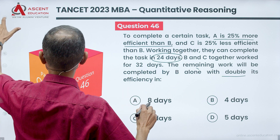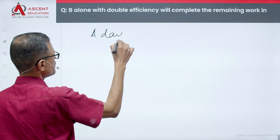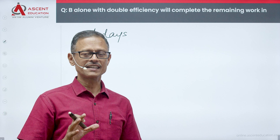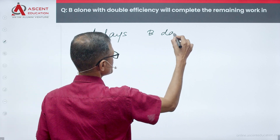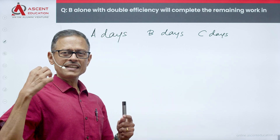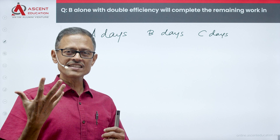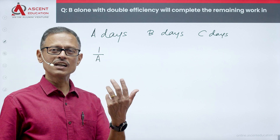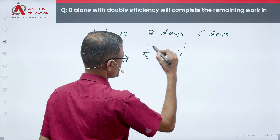A is 25% more efficient than B. In work-time questions, we assign variables: A takes A days, B takes B days, C takes C days to complete the task independently. In one day, A completes 1/A of the task, B completes 1/B, and C completes 1/C.